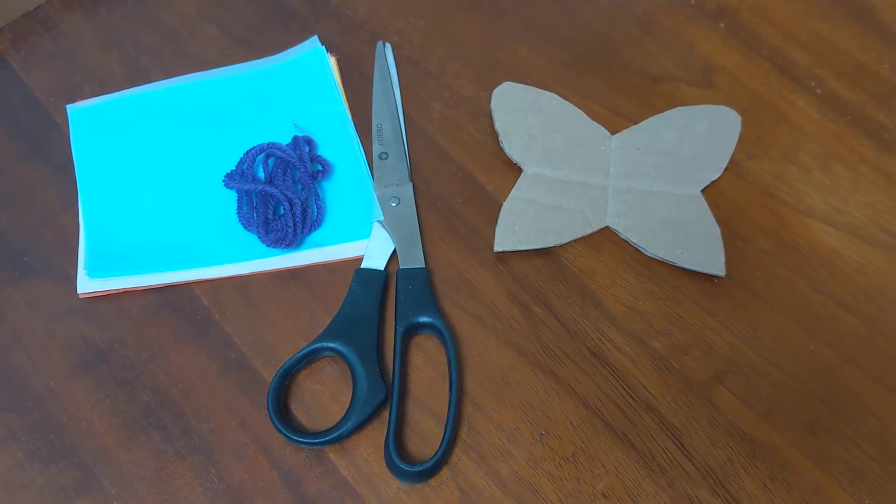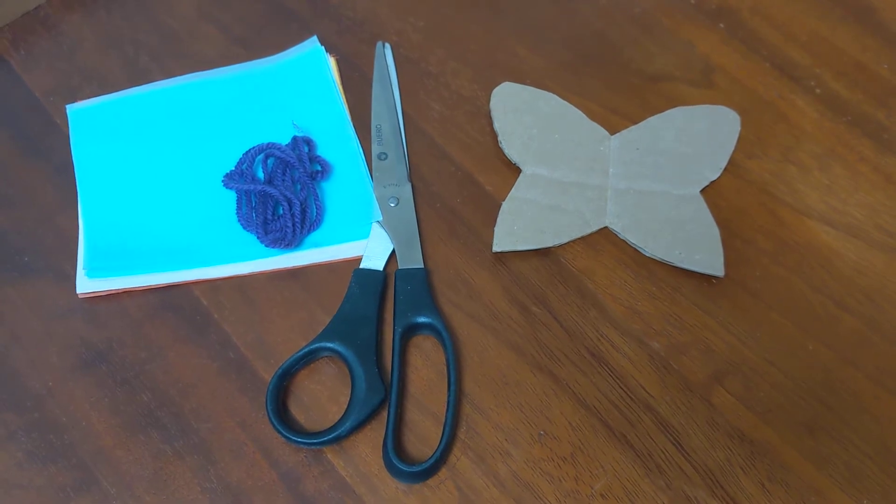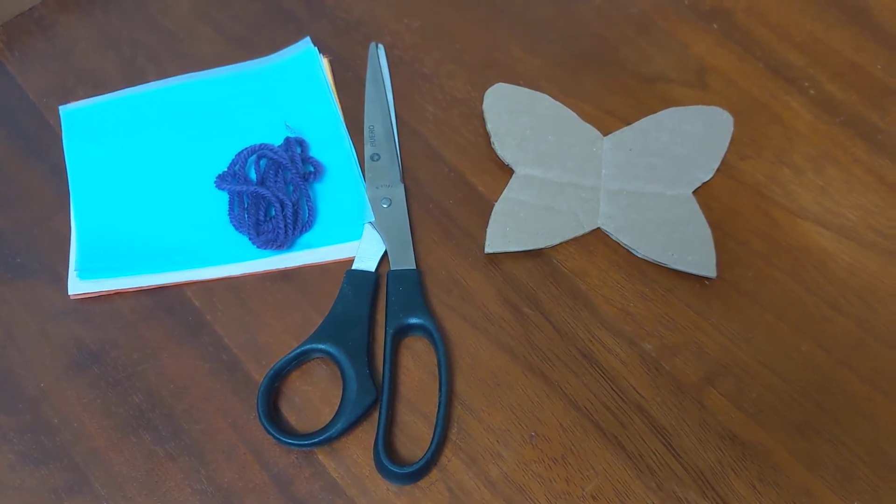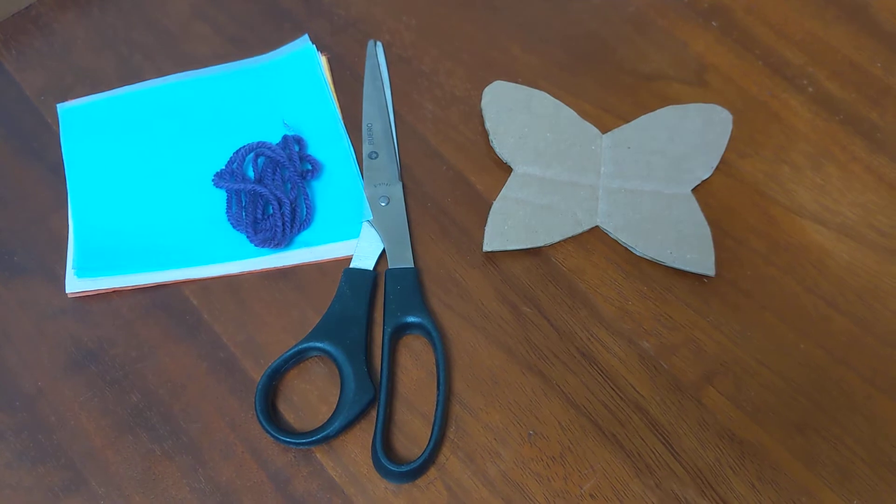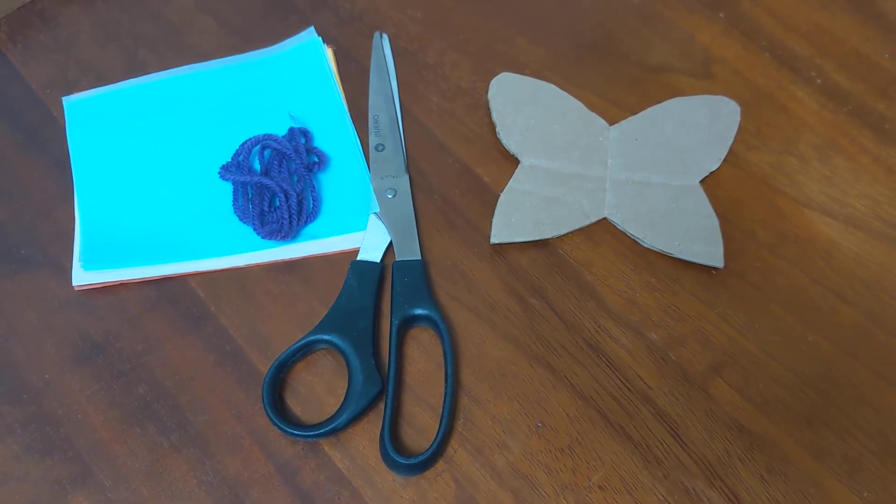To make a butterfly, first of all you need some tissue paper, some wool, some cardboard that you're going to design your butterfly shape on, and some scissors.